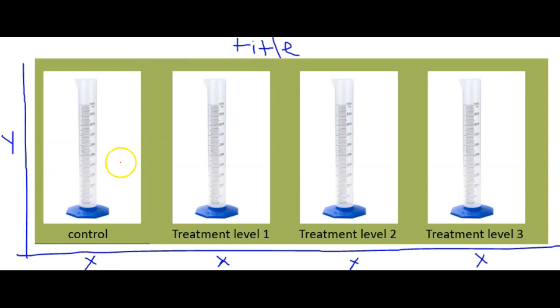I've written in the words control, treatment level one, two, and three, but that's not enough detail. Now we had a little red line here that was just showing us where the water was, and so I'm going to draw that in here. Then we're going to model what you should expect to see. Whatever this volume is at this red line, say right here it's 10 milliliters, that is going to be your initial volume.